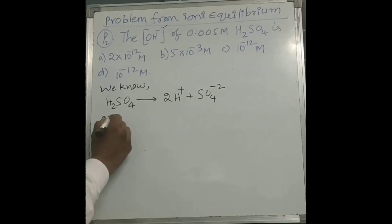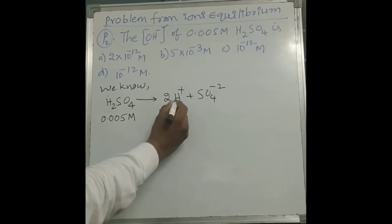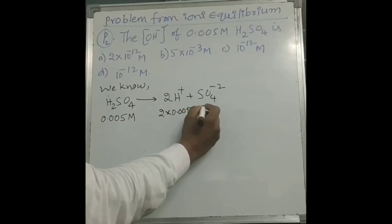0.005M H2SO4. And after ionization, 2 into H+ ion concentration, also in the same way 0.005M, and SO4-2 ion concentration is